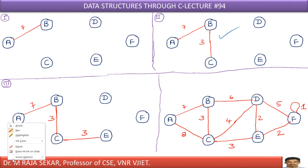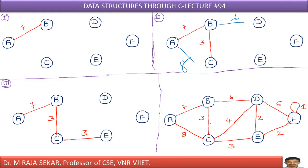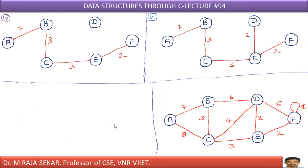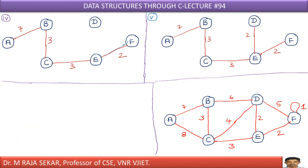Now I must search for edges from A, B, and C. From A, I have 8. From B, I have 6. From C, I have 4 and 3. These are the possibilities: 4, 6, 3, 8. The minimum is 3. Therefore, I must include that edge. Now I must check from A, B, C, and E, and find the least cost weight edge. Proceeding in that manner, the next least cost weight edge is E-F.